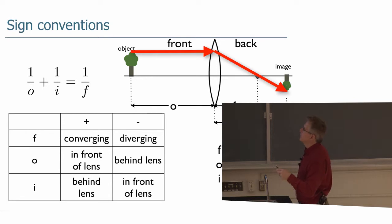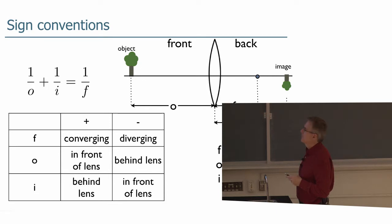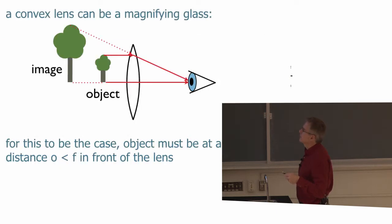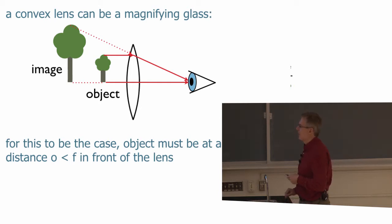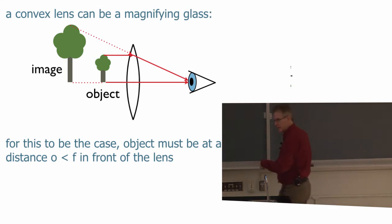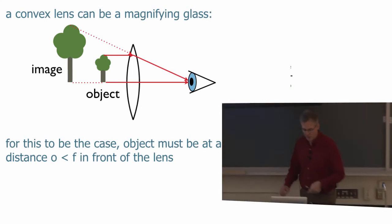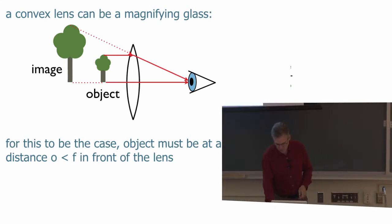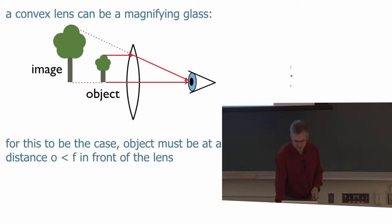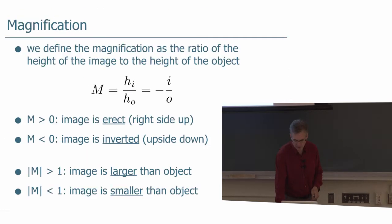It's a real image — there's really light coming from that place. If it's in front of the lens, it's a virtual image, and light is not really coming from that place in space. So you're going to have to break those false impressions you've got about real and virtual images. You'll think about it more in DL.